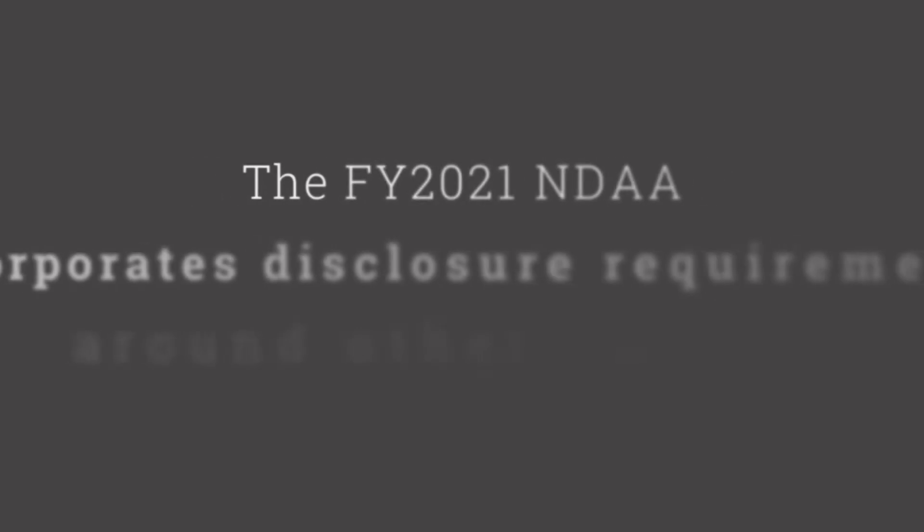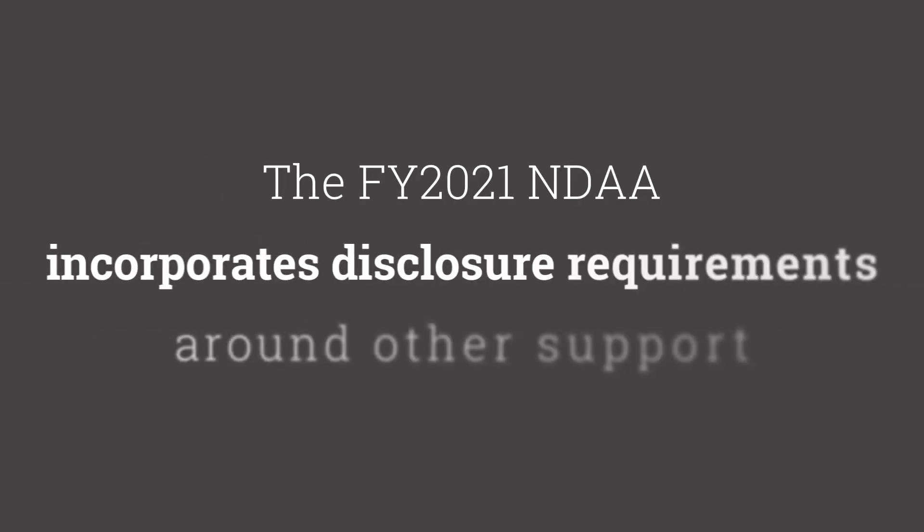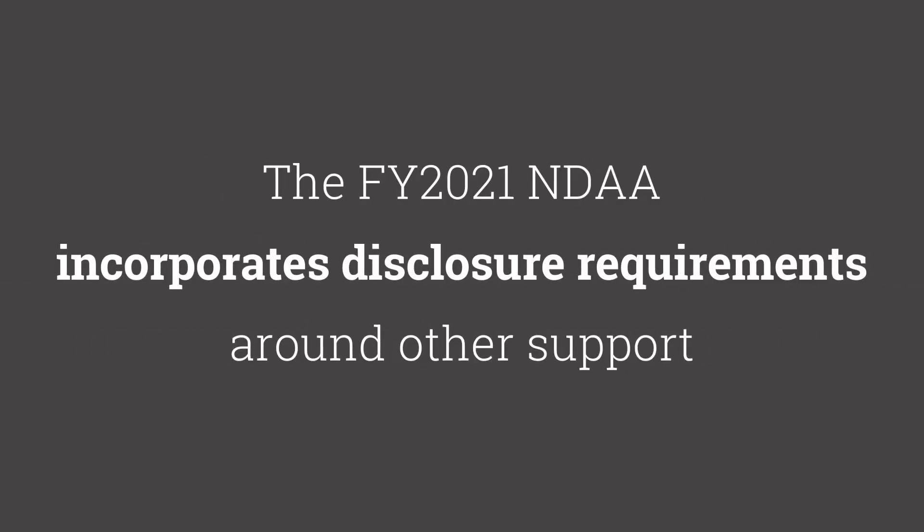The guidance also encourages agencies to establish guidelines in conjunction with their implementation of the FY 2021 National Defense Authorization Act. NDAA Section 223 incorporates specific disclosure requirements around other support.